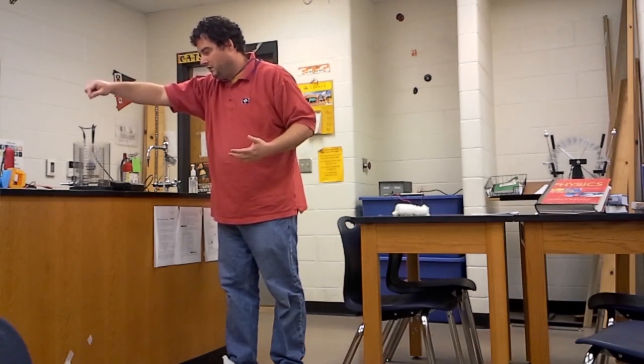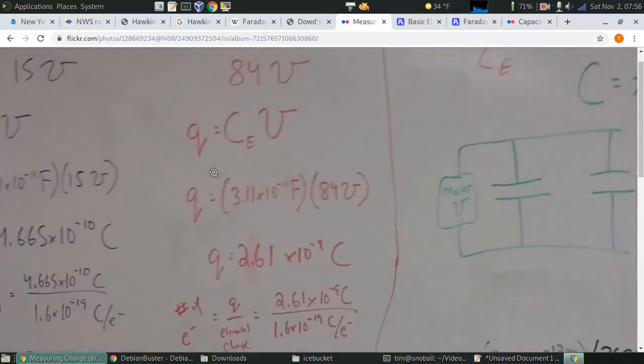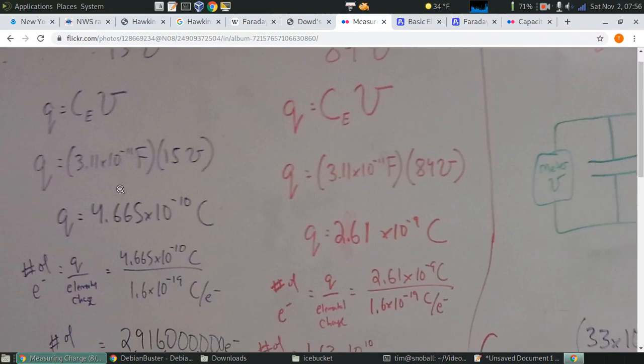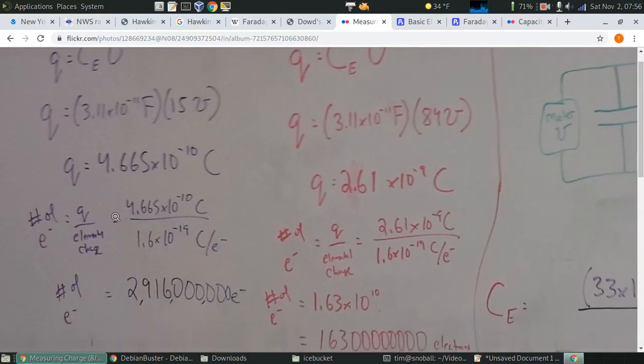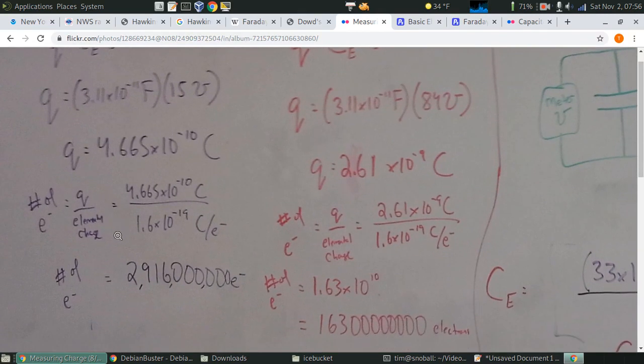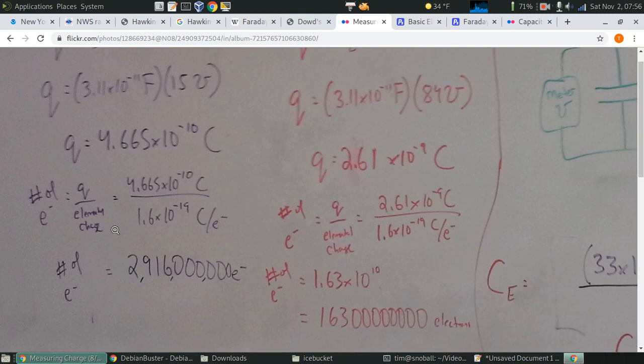So this is reading minus 15 volts. So here's the calculation for 15 volts. The minus 15 means it's the opposite charge that we had from before. So we'd use our same capacitance to convert the 15 volts into a charge in Coulombs. And it's obviously a smaller charge than what we had from before, but it still represents almost 3 billion electrons. So a ton of electrons get transferred, even in common things like scuffing your feet on the carpet or rubbing two fabrics together.